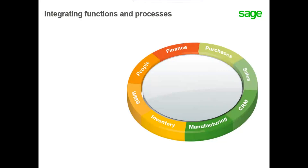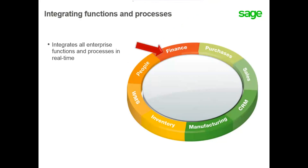Let's begin this topic by taking a look at Integrating Functions and Processes. The software is designed to support all business processes in real time, including distribution, sales and purchasing, manufacturing, inventory, finance, customer relationship management, Sage X3 People for payroll and HR, along with warehousing.